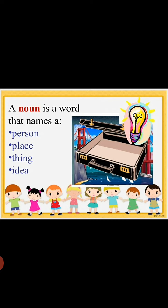A noun is the name of a person, place, thing, or idea. Any person's name like Ritisha, Honey, Happy; any place name like Delhi, Mumbai; any thing like chair, table, bottle; and ideas like bravery and honesty — those words are the different categories of noun.